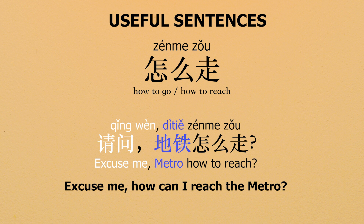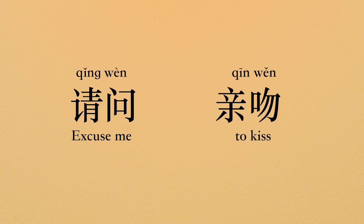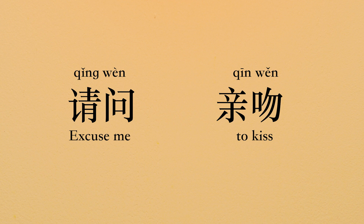Now pay attention to those two different characters, be careful here. Because the first one, 请问 on the left, means excuse me and it's used to ask questions. The one on the right means to kiss. So be careful — if you use the wrong one, you're going to say to someone that you want to kiss them. Be careful with pronunciation when you use 请问.